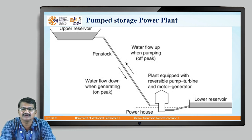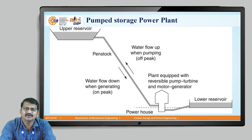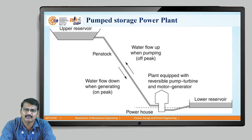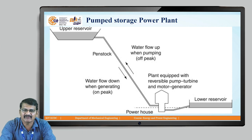This is a diagram of a pump storage power plant. In the upper reservoir there is water available — it is a hydroelectric power plant. There is a penstock, then there is a prime mover. The prime mover can work as a motor or generator; it can be a turbine or a pump. It acts as a pump or generator, and there is a lower reservoir.